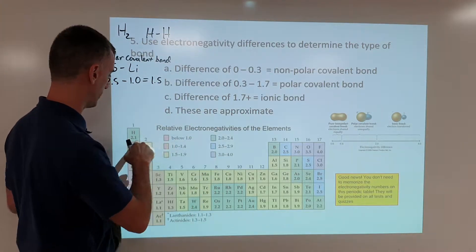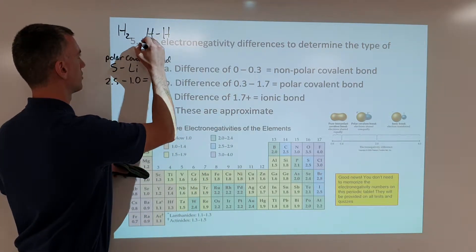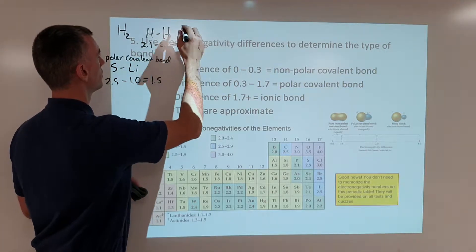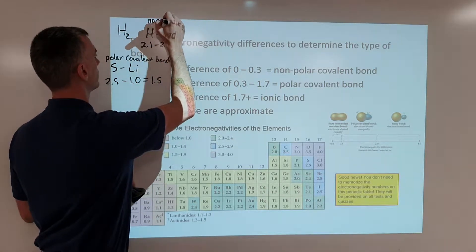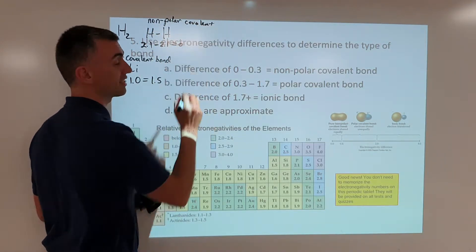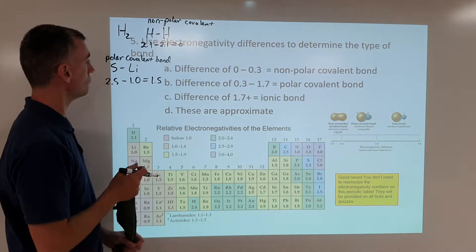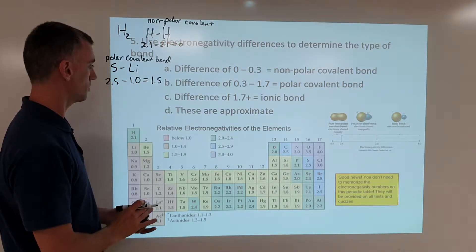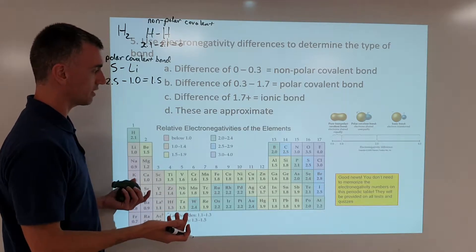So what you do is you find hydrogen, 2.1 minus 2.1 equals 0. So no difference means nonpolar covalent is the identity of the type of bond. So that works just fine. That's essentially how you'd use it for any kind of compound.